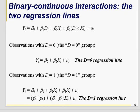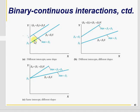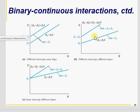Looking at the visual comparison: in binary-binary interaction, the slope is the same (β1 in both cases) but intercepts differ. In binary-continuous interaction, slopes differ. In continuous-continuous interaction, both intercepts and slopes differ. So you can have these three cases.